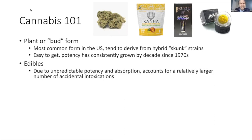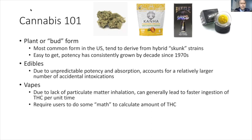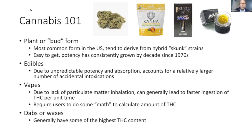With edibles, because they're absorbed through the stomach and intestine, it's a little unpredictable how fast the high will happen, so people sometimes accidentally use a larger amount than intended. With vaping, it's easier to ingest THC quickly — that's the main difference from smoking the plant. Tracking vape consumption is mathematically difficult; you have to calculate milligrams per milliliter in the cartridge rather than counting joints or grams. Dabs or waxes, though relatively uncommon, have probably the highest average THC content of any cannabis product.